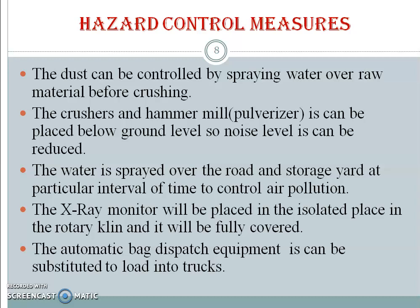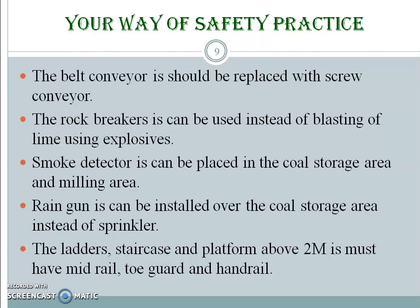Hazard control measures: dust can be controlled by spraying water over raw material before crushing. Crushers and raw mill can be placed below ground level to reduce noise levels. Water is sprayed over roads and storage areas at regular intervals to control air pollution. X-ray monitors should be placed in isolated locations at the rotary kiln and fully covered. Automatic bag dispatch equipment can substitute manual loading. Belt conveyors should be replaced with screw conveyors. Rock breakers can be used instead of blasting with explosives. Smoke detectors should be placed in coal storage and milling areas. Rain guns can be installed over coal storage instead of sprinklers. Ladders, staircases, and platforms above 2 meters must have mid-rail, toe guard, and handrail.